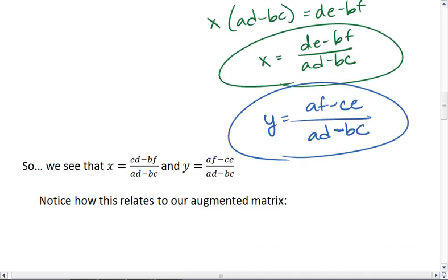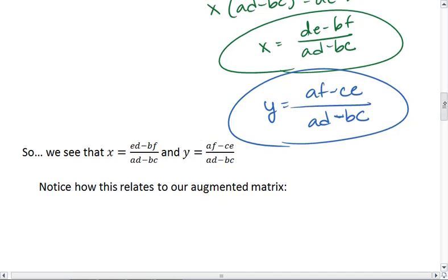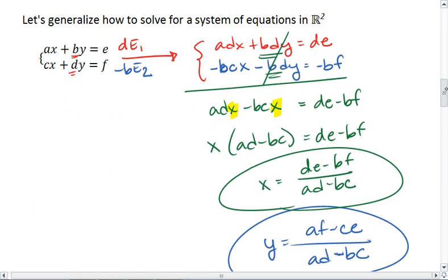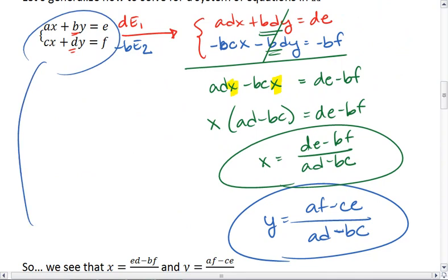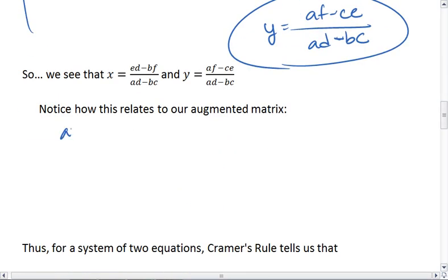These values, this numerator and denominator, mean something. But to figure out what they mean, we need to look at our augmented matrix. Let's look at the augmented matrix for this system of equations. So remember our equations were AX plus BY equals E and CX plus DY equals F. Then the augmented matrix is A, C, B, D, E, F.